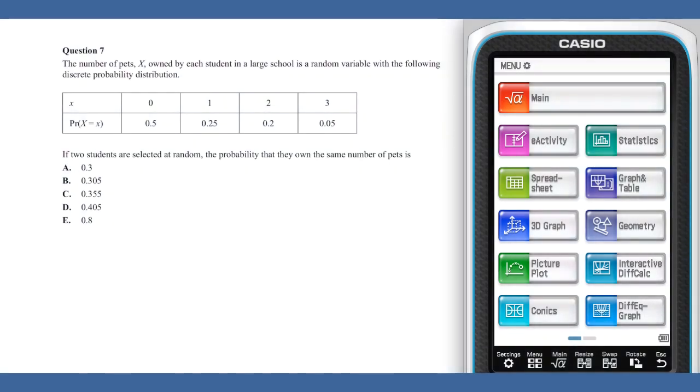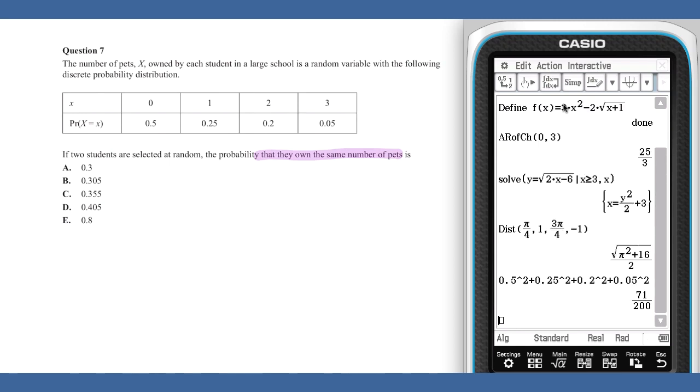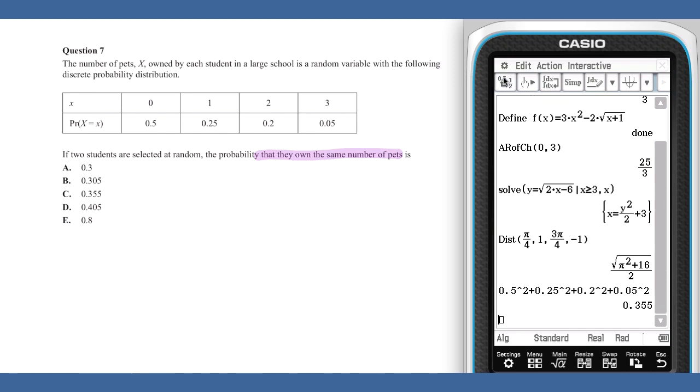Question 7. The probability that two students chosen at random have the same number of pets can be calculated as follows. This is the probability that two students chosen at random will have no pets, plus the probability that the two students will both have one pet, plus the probability that the two students will both have two pets, and the probability that they will both have three pets. If we convert this number to a decimal, we see that our answer is c.